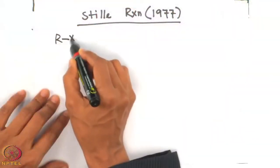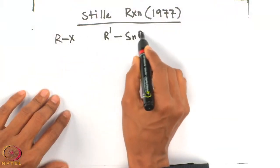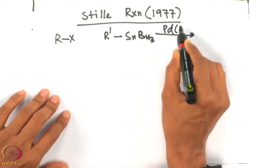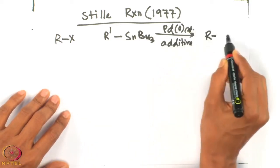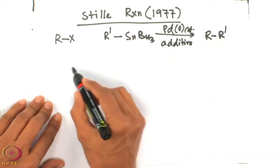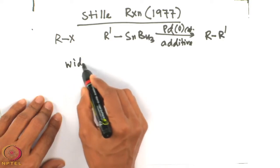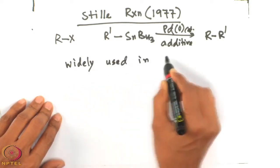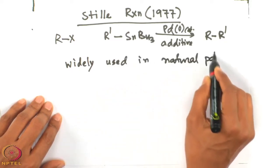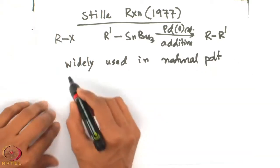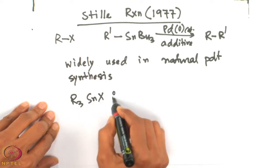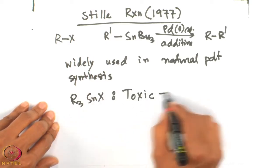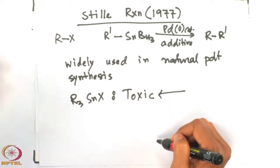Let us look at the Stille reaction. You have R-X reacting with R'-SnBu3, for example, with a palladium(0) catalyst in the presence of an additive to get R-R' as the product. This is very widely used in natural product synthesis. But R3Sn-X is toxic, of course, so there is a problem in medicinal chemistry and industrial use.